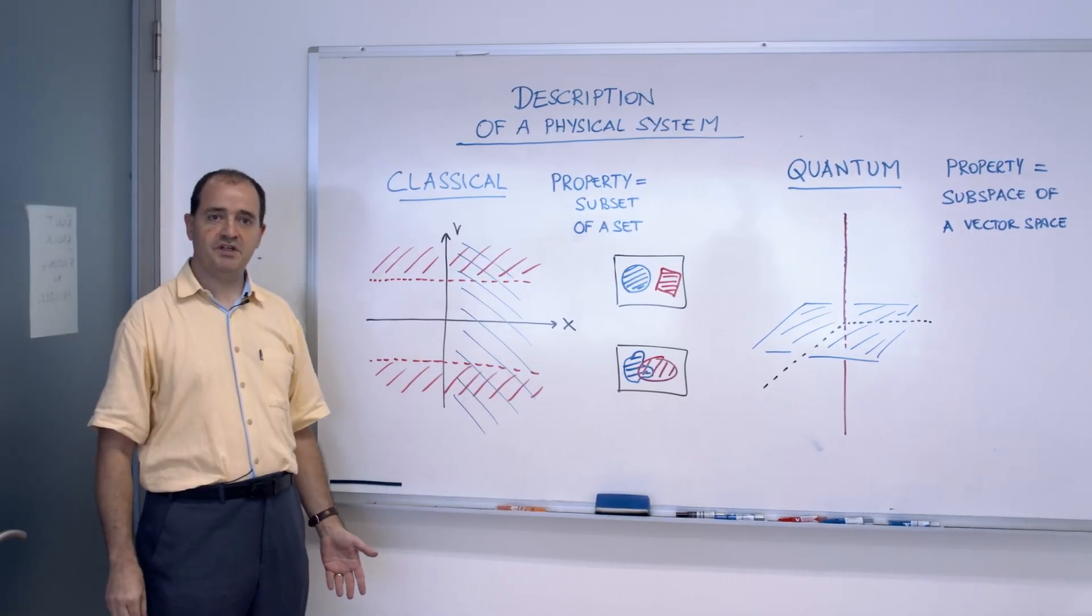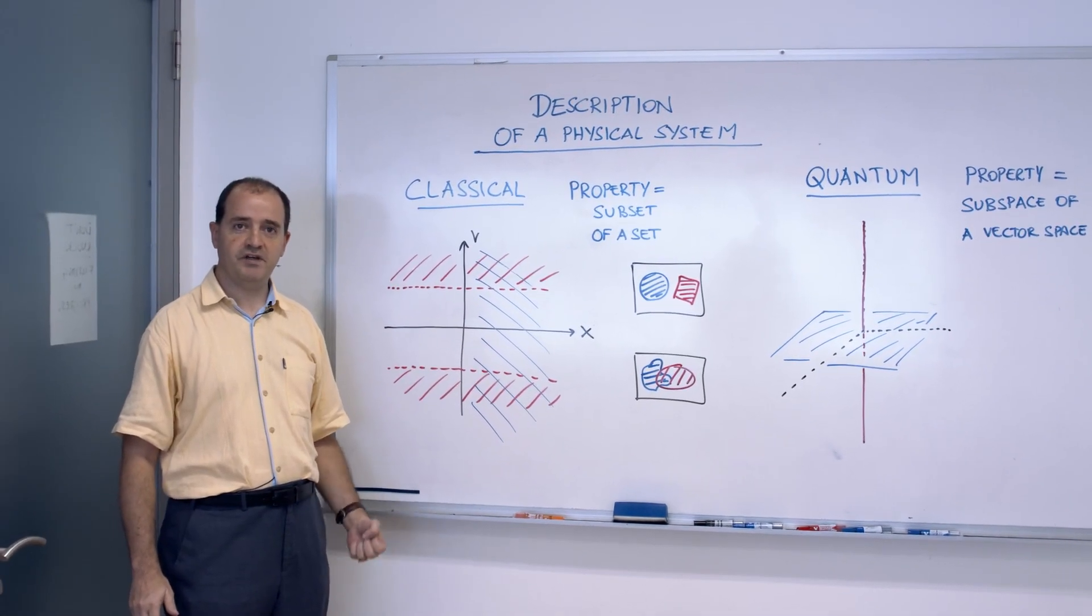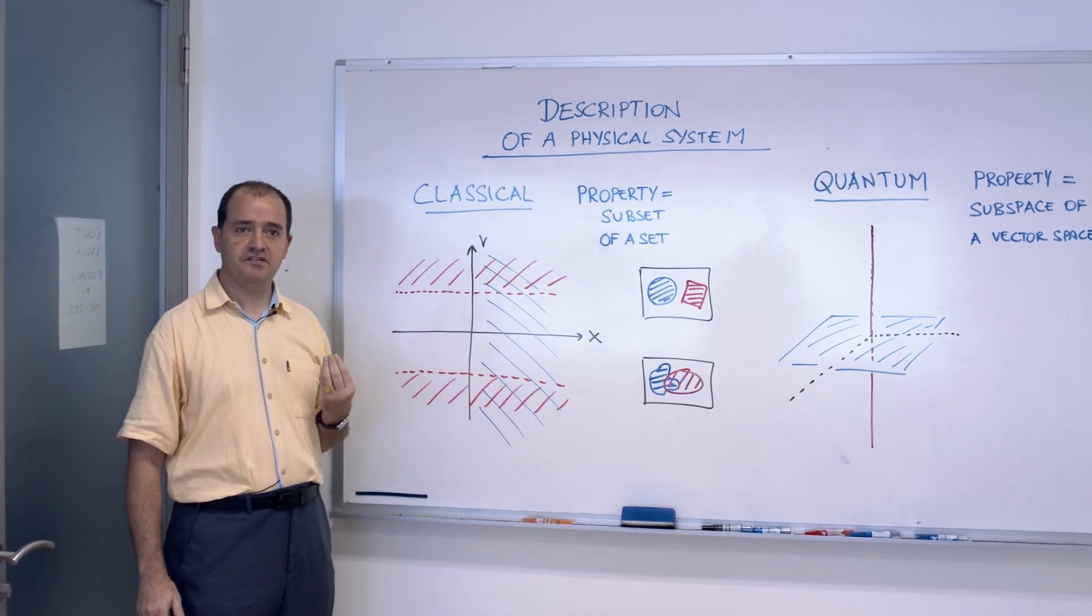Counter-intuitive features of the mathematics in quantum theory come from the fact that we have to change the way we describe a physical system.